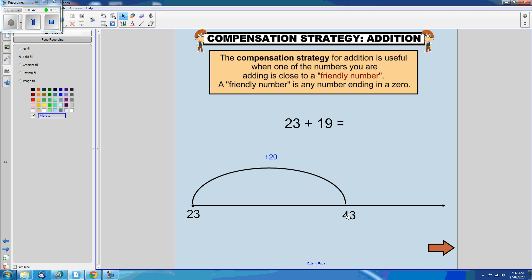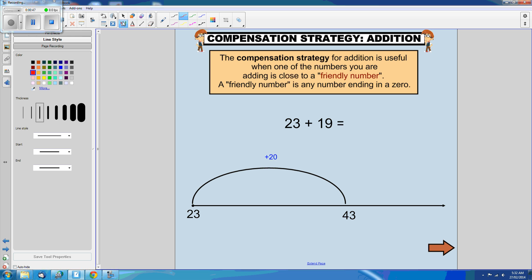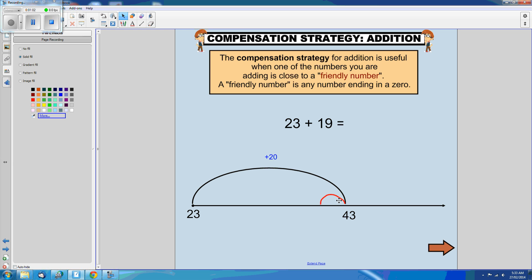I often call the compensation strategy the oops strategy, and this is why. Because I need to remember to compensate. I think to myself, hmm, so I've added 20. Oops, I only meant to add 19, so I have to